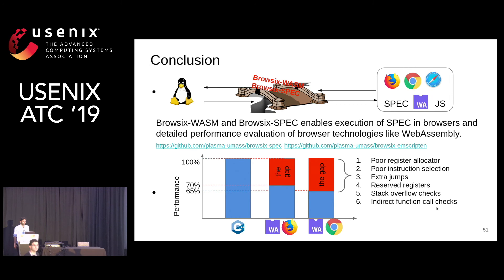Why do you want to use Browsix in this context when WebAssembly was never designed to support a rich set of system calls? Is this really the right thing to do?